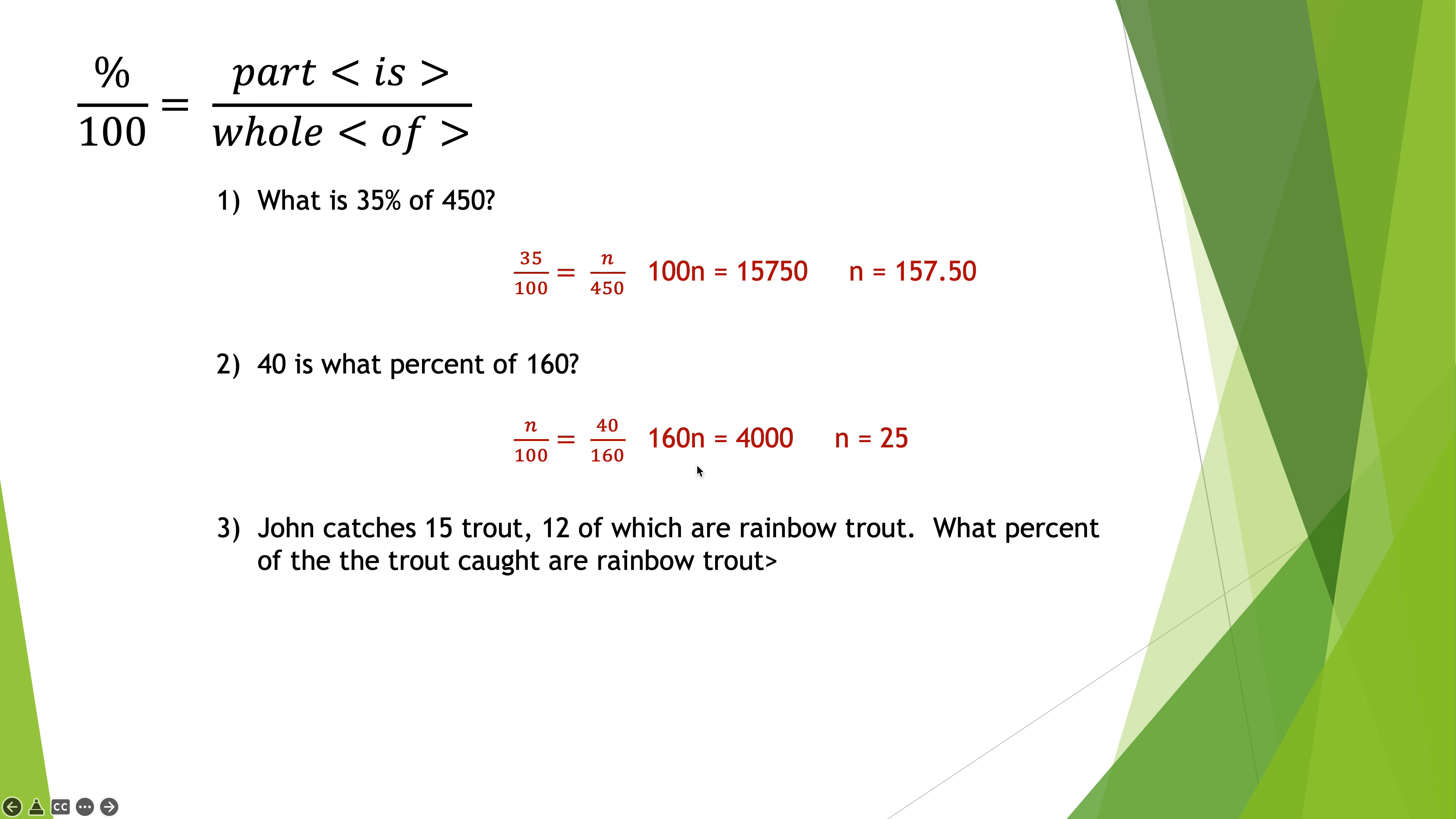Last but not least, John catches 15 trout, 12 of which are rainbow trout. What percent of the trout caught are rainbow trout? Let's figure out what percent of the trout caught are rainbow trout. Remember, percent over 100 equals part over whole. The percent is what we're looking for, so the N goes in the percent place. And the 12 is the part that's rainbow trout out of the 15 total. Cross multiplying, 15N is 1,200. Dividing by 15, N is 80. So that's just a brief review. None of it is particularly meant to be challenging. But that's some basic working with percentages right there.